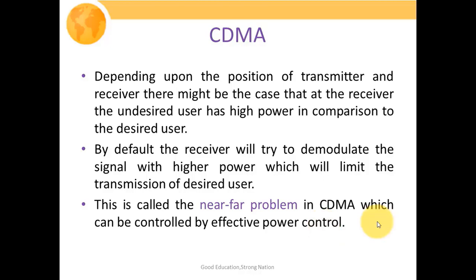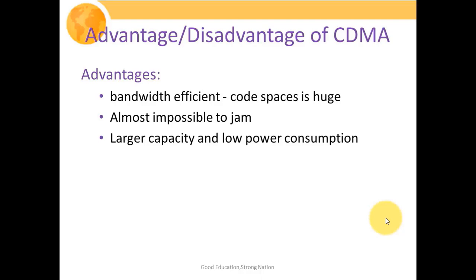The advantages of CDMA systems are: it is highly bandwidth efficient since the code space is huge, allowing transmission of much larger amounts of information, depending on the number of orthogonal codes available. Second, it is almost impossible to jam since we exploit a spread spectrum communication system — anti-jamming is inherent in spread spectrum. Third, larger capacity and low power consumption: power consumption is quite low since we transmit noise-like signals of very low power, and large code spaces allow many users to share the common medium.